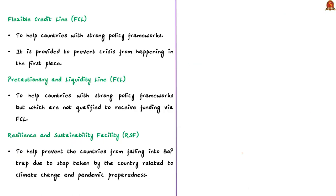The next one is the Flexible Credit Line or FCL. The FCL is provided to countries with very strong policy frameworks and track records in economic performance. The financial support received under FCL is used to prevent a crisis from happening. Then comes the Precautionary and Liquidity Line or PLL — it is designed to meet the liquidity needs of member countries with sound economic fundamentals but with some remaining vulnerabilities that preclude them from using the FCL. Basically, countries with good economic fundamentals but not good enough for FCL will receive the PLL facility.